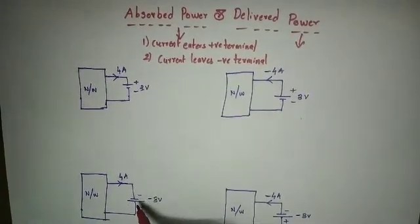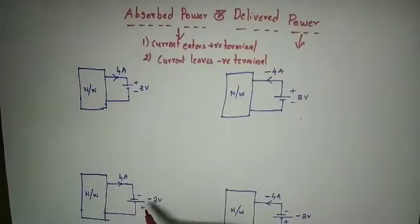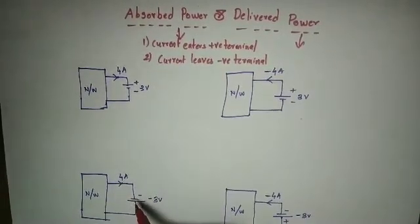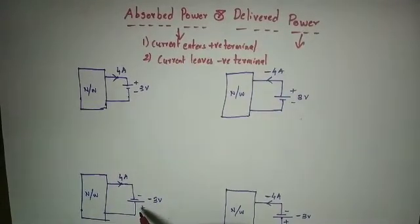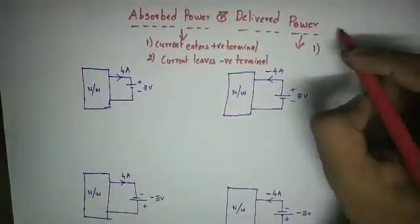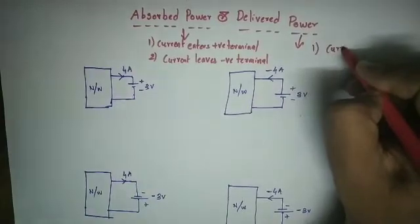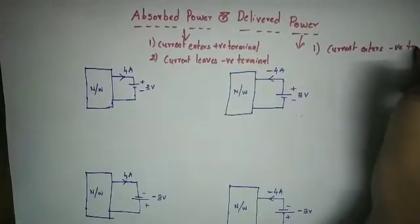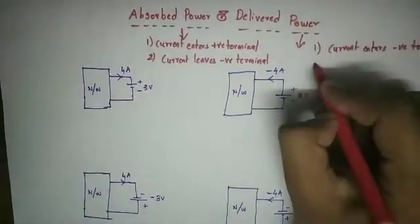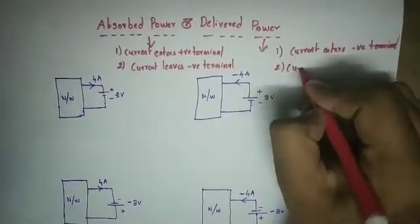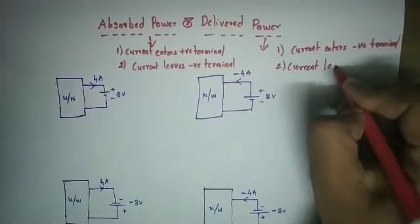If the negative terminal is entered by the current, that means the positive terminal is left. So if current enters the negative terminal and leaves the positive terminal, the source delivers power.